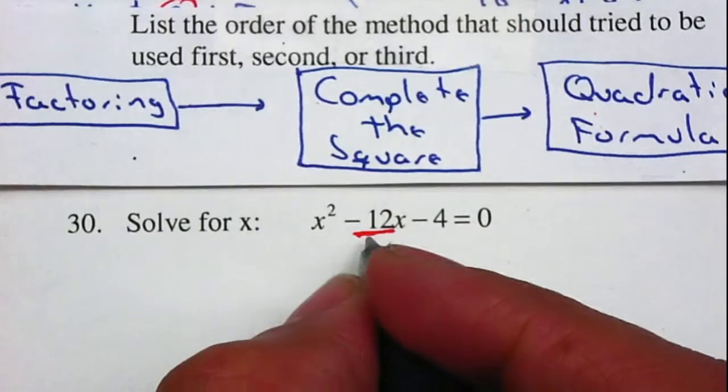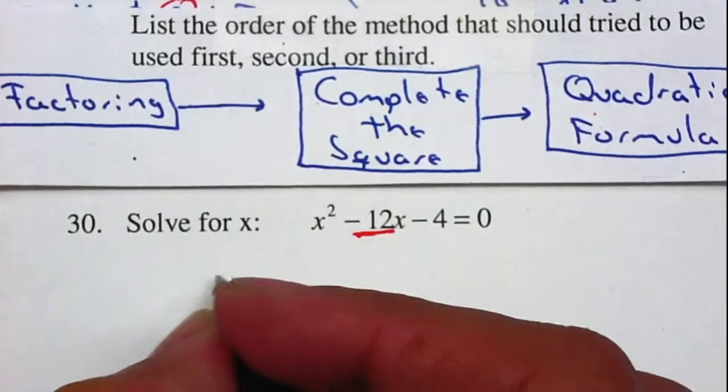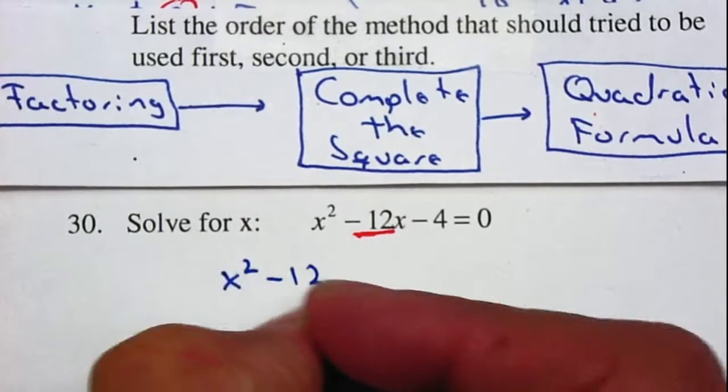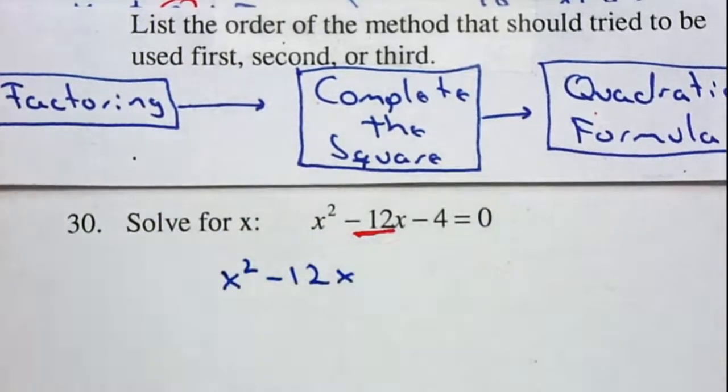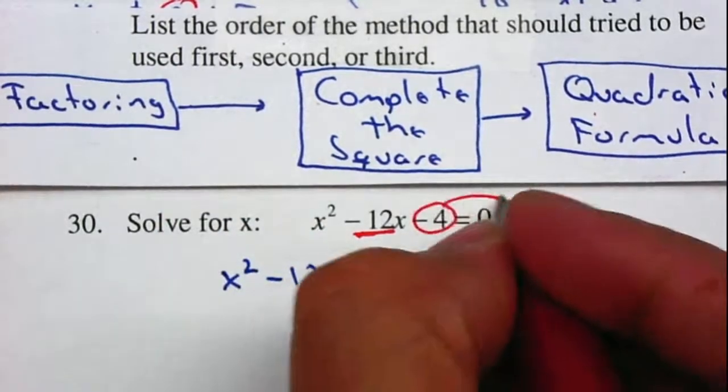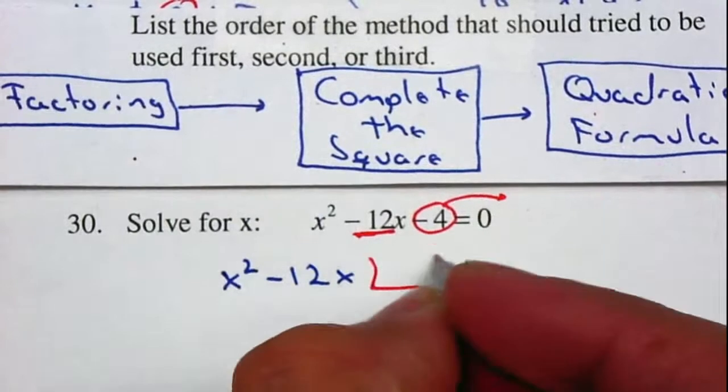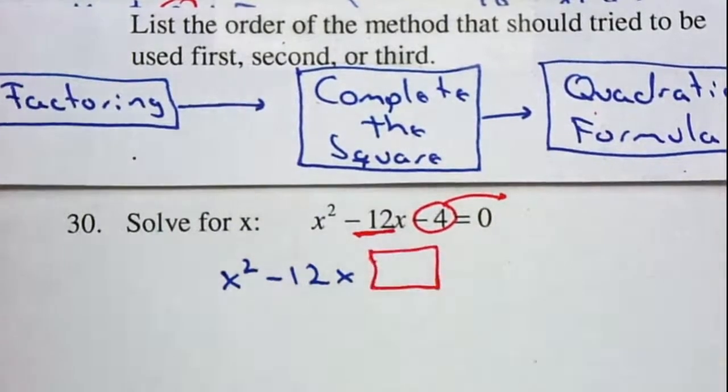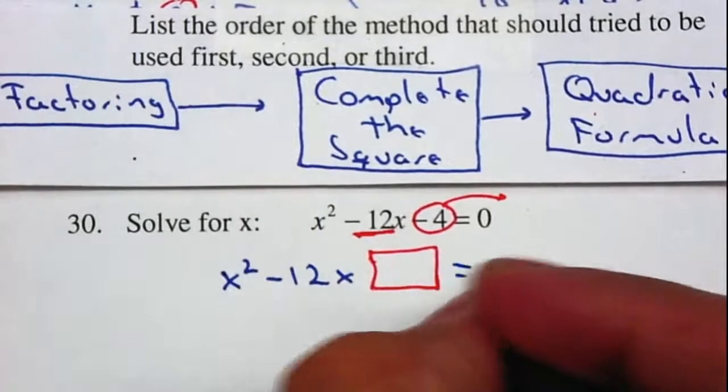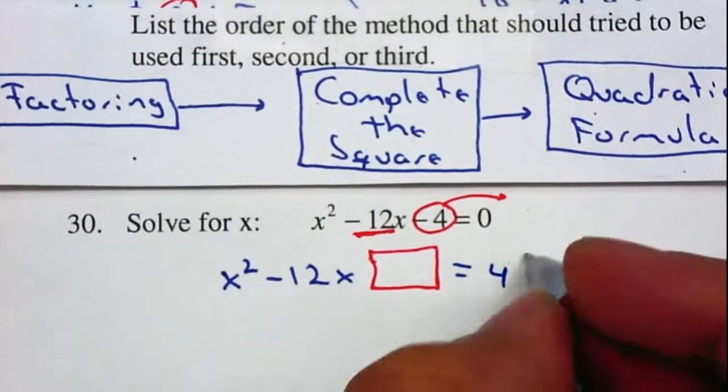To complete the square, I'm going to place my x terms on the left - my x² and my x - and move the 4 to the right where it becomes positive 4. I'm going to make space for my square because we are completing the square, so it equals 4 and I'm going to place the square in.